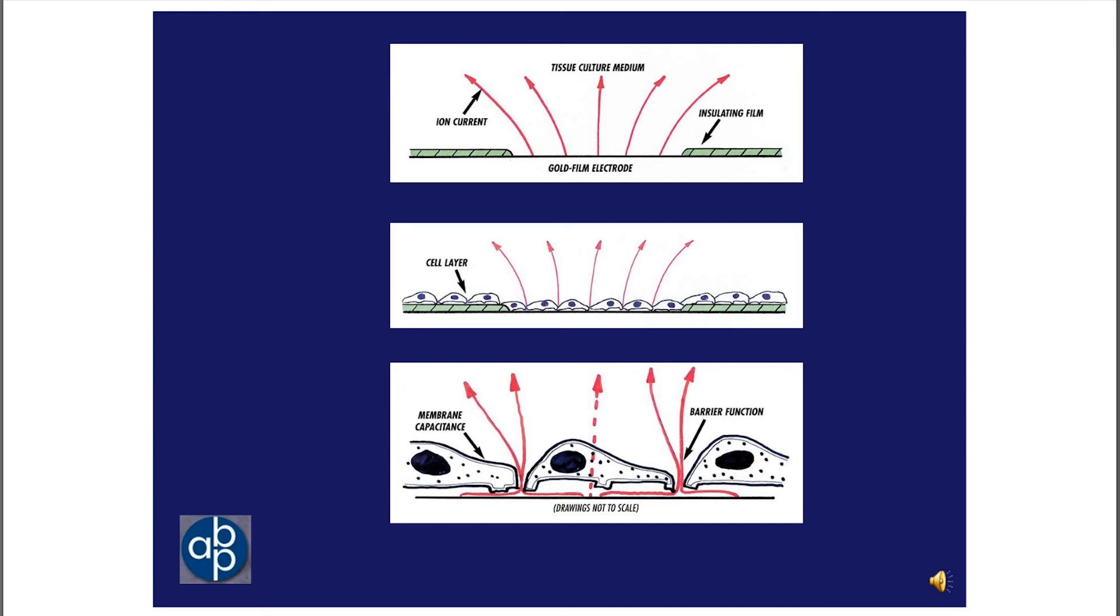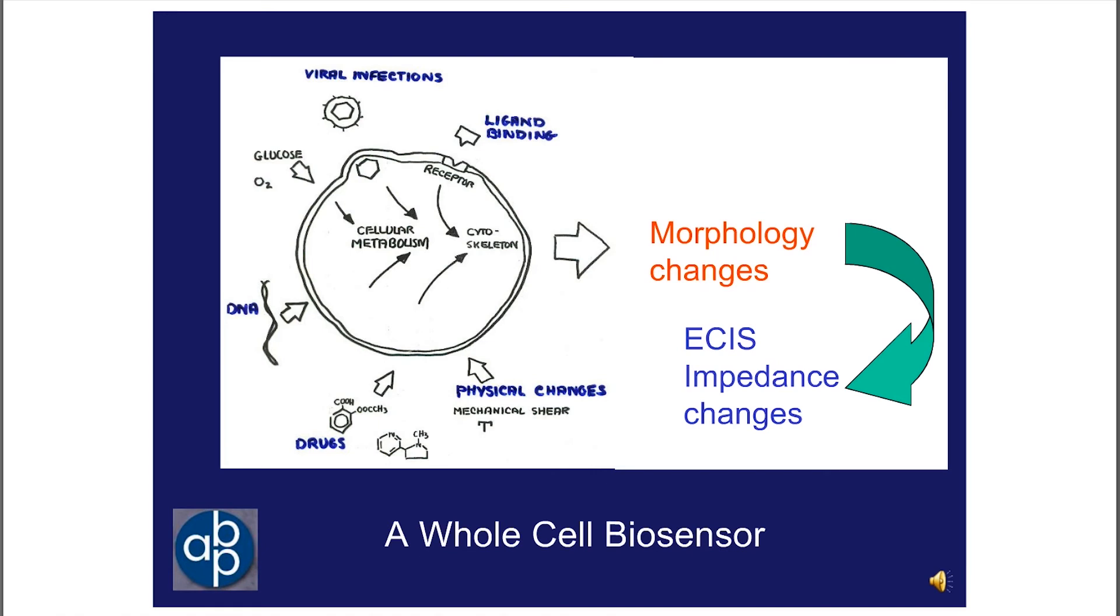In conclusion, anything that impinges on the cytoskeleton and changes the morphology of the cell will change these current paths, and this will lead to a measurable impedance change that's detected by ECIS. These changes can come about from a variety of conditions, from signal transduction, viral infection, toxic compounds, different drug exposures of the cell, DNA transfection, changes in the chemical and physical conditions of the cells in culture. This is an extremely versatile measurement, and I hope as you explore the other presentations, you'll see the many areas in which ECIS might impact your research with cells in culture.